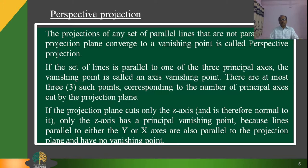Perspective projection: the perspective projections of any set of parallel lines that are not parallel to the projection plane converge to a vanishing point. If the set of lines is parallel to one of the three principal axes, the vanishing point is called an axis vanishing point. There are at most three such points corresponding to the number of principal axes cut by the projection plane. For example, if the projection plane cuts only the z-axis, only the z-axis has a principal vanishing point, because lines parallel to either the y or x axis are also parallel to the projection plane and have no vanishing points.